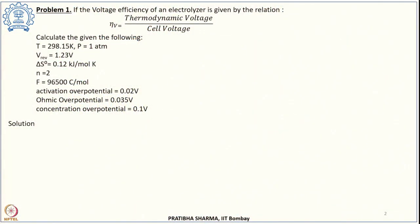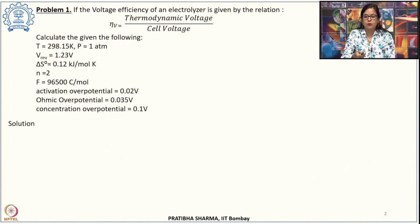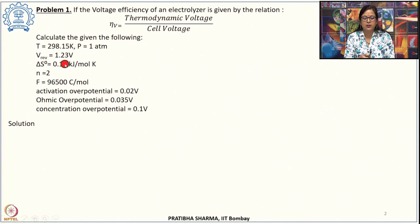This is a tutorial class on water electrolysis and we will solve problems related to electrolysis. The first problem states that if the voltage efficiency of an electrolyzer is given by efficiency equal to thermodynamic voltage divided by cell voltage, with temperature 298.15 Kelvin, pressure 1 atmosphere, reversible cell voltage 1.23 volt, and standard entropy change 0.12 kilojoule per mole per Kelvin.